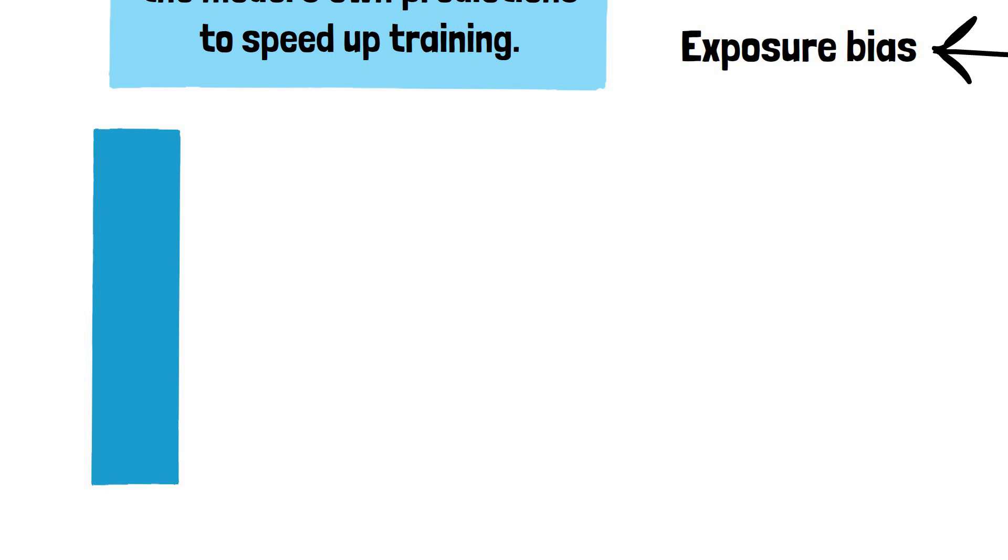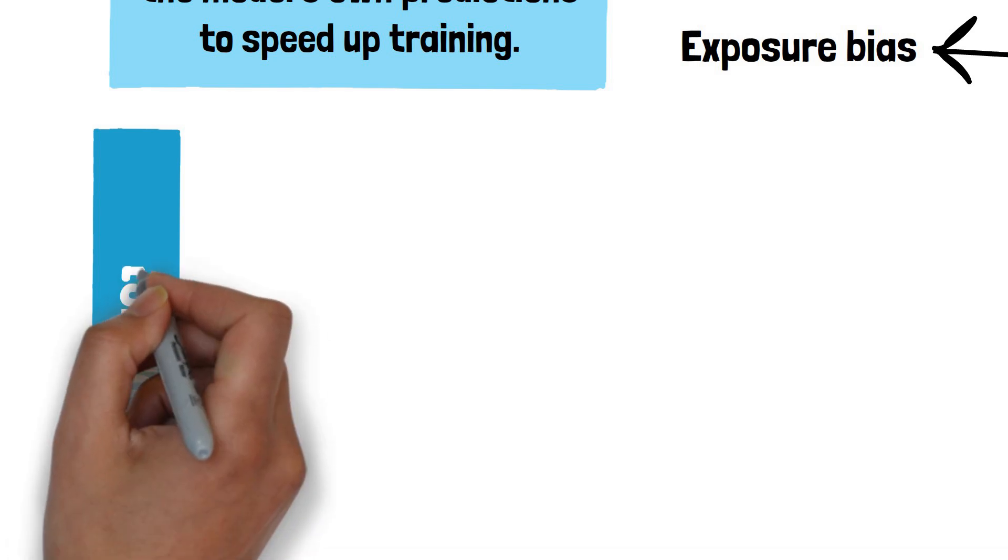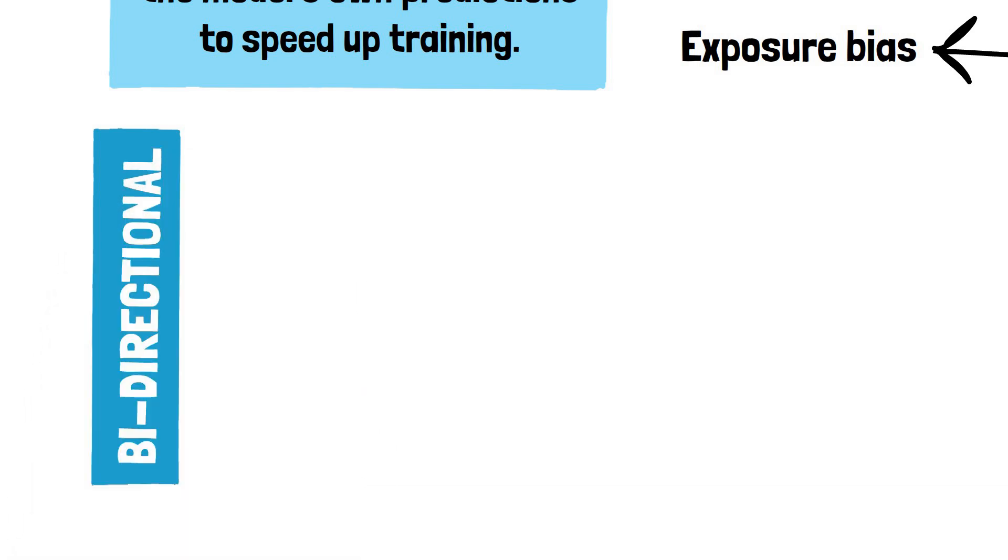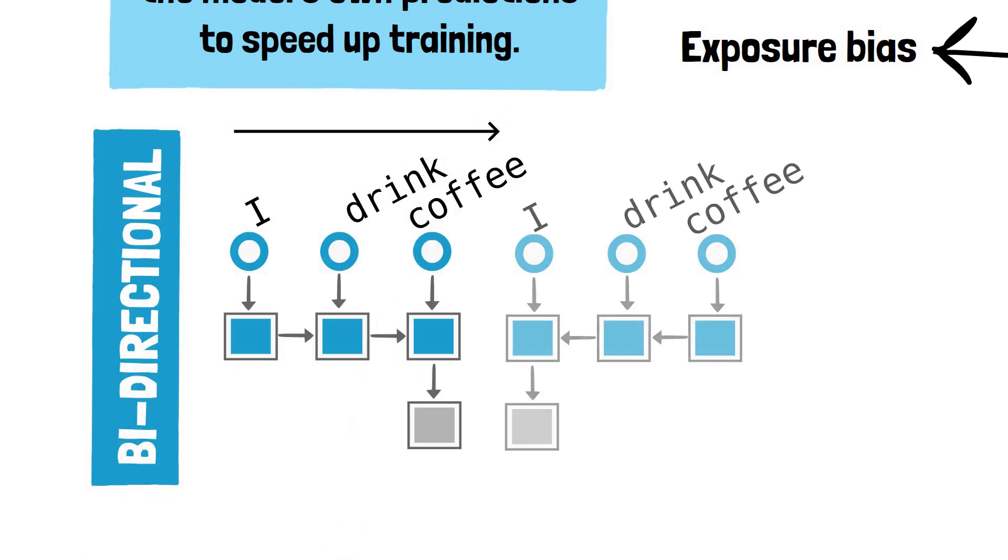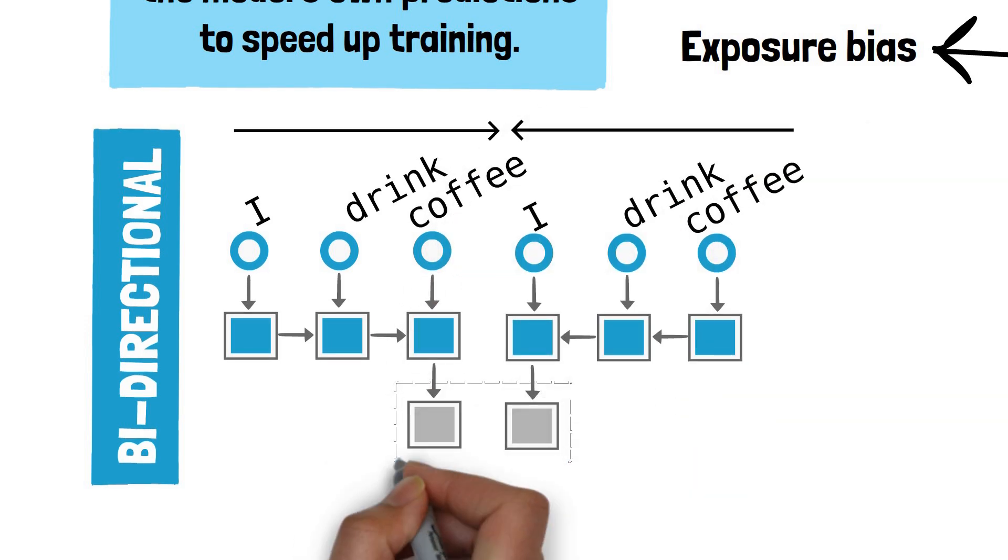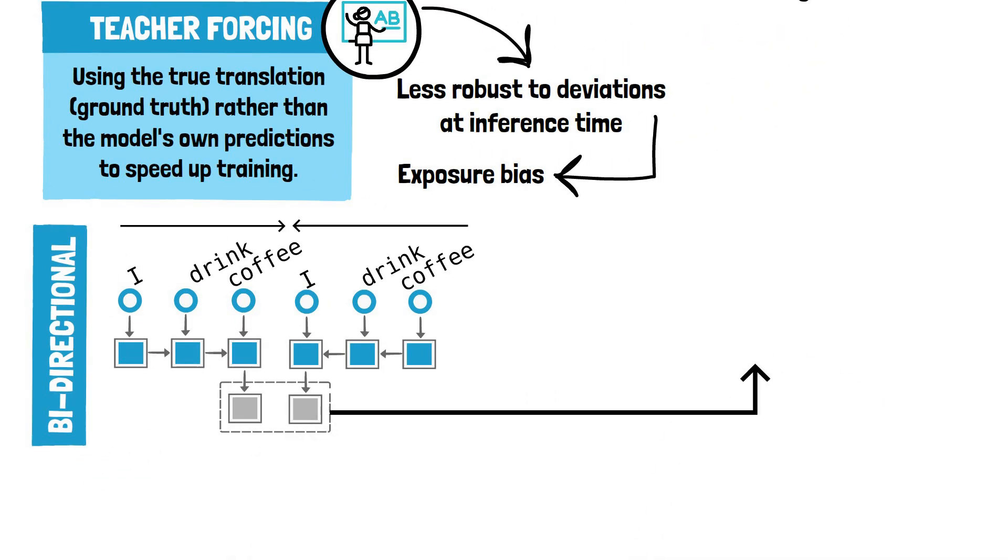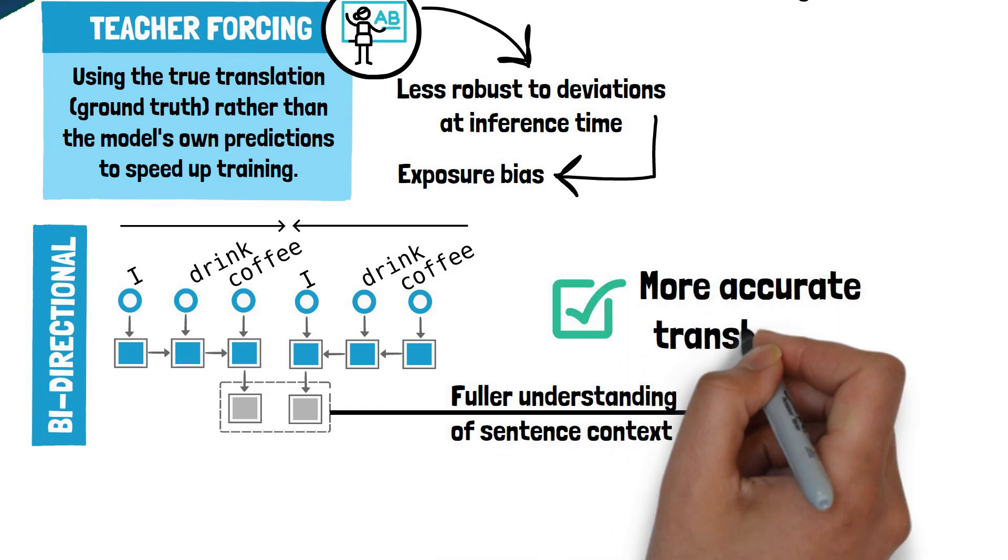Another optimization is using a bidirectional RNN for the encoder. In this setup, the model processes the input sentence in both the original and reverse order. This results in two sets of hidden states for each part of the sequence, giving the model a fuller understanding of the sequence context from both directions, which can lead to more accurate translations.